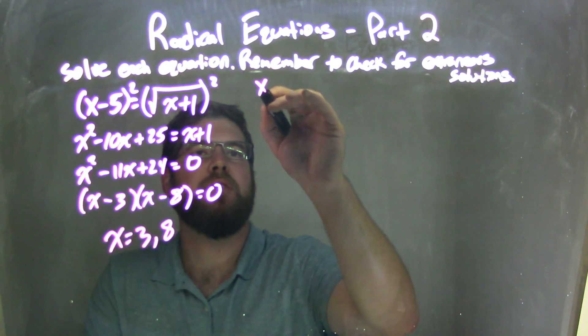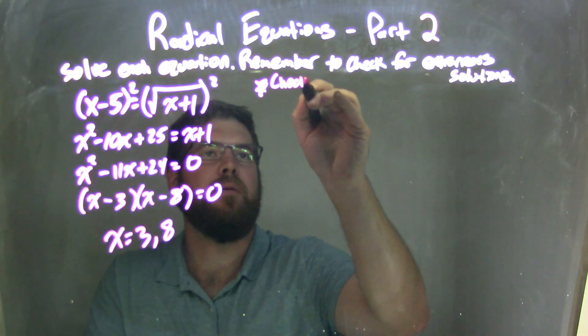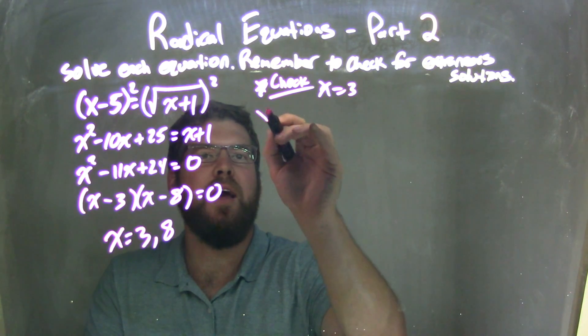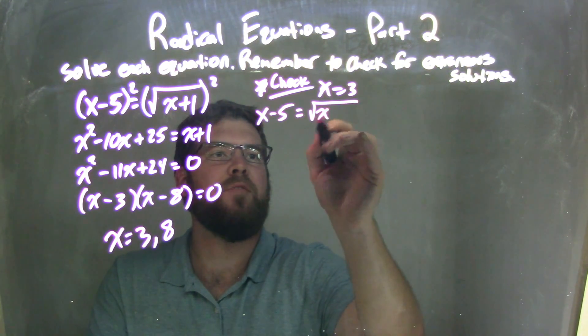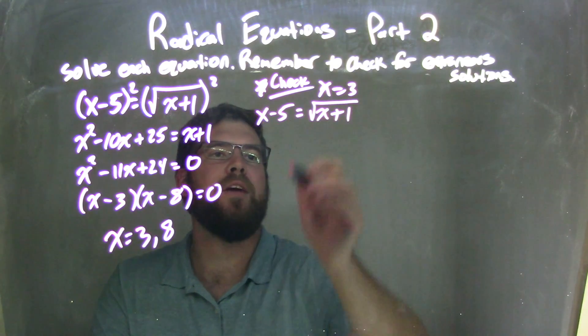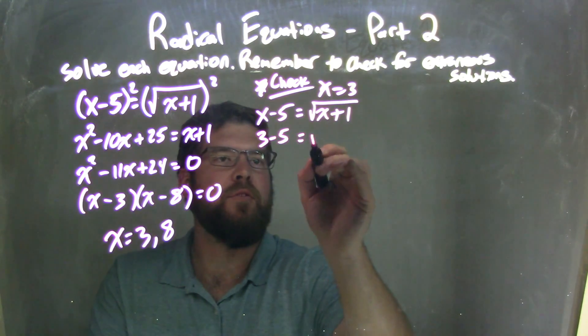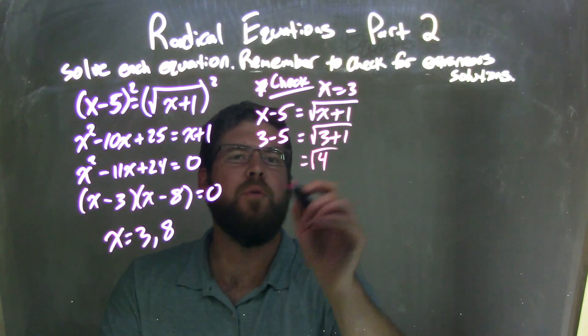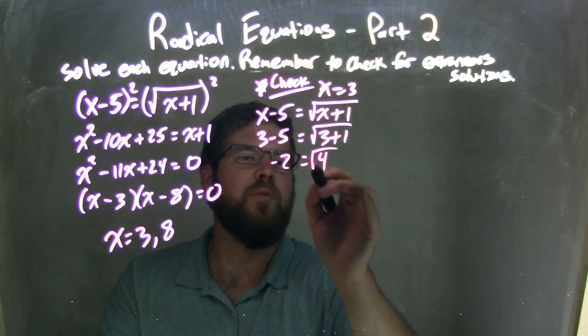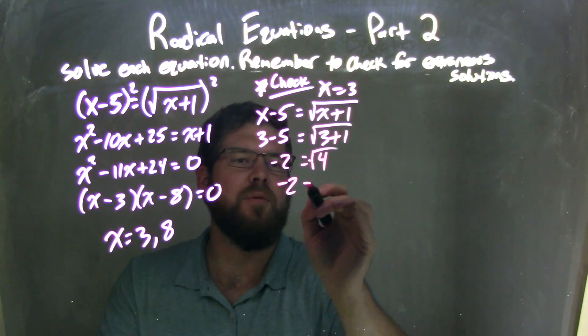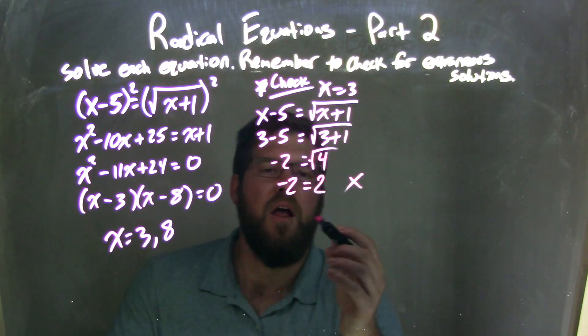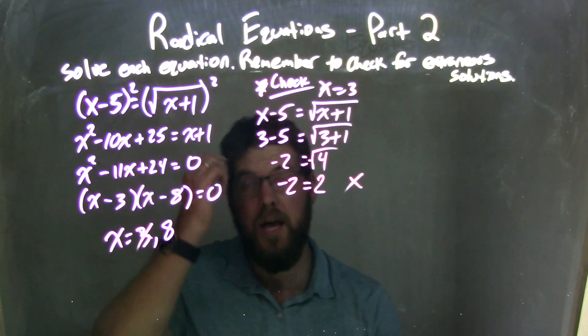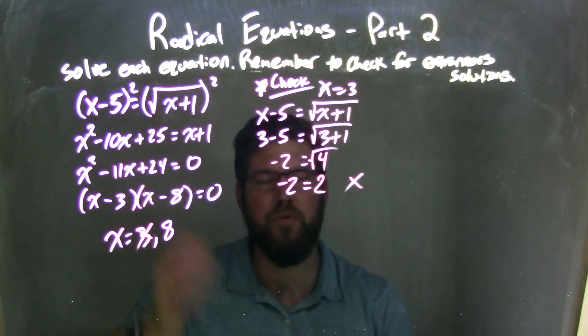Here's my check. We have x equals 3 first. So, let's rewrite our equation. x minus 5 equals square root of x plus 1. Let's plug 3 in for both x's. 3 minus 5 here equals square root of 3 plus 1. 3 plus 1 is 4, so the square root of 4 over there. 3 minus 5 is negative 2. Square root of 4 is just 2. So negative 2 equals positive 2. That's not correct, right? They're not equal. So 3 is actually what we call an extraneous solution. It worked here when we solved, but when we checked it, it didn't come back full circle.